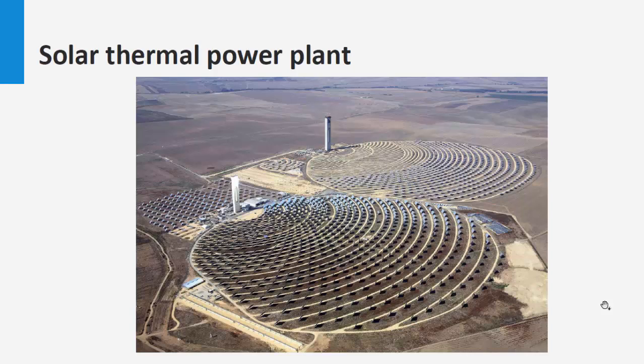In the previous section, we talked about solar concentrators and their applications for high temperature water heating systems. But this is not the only application. High temperature fluids can be used in steam turbines to produce electricity. Solar thermal power refers to the conversion of solar energy to mechanical and electrical energy.